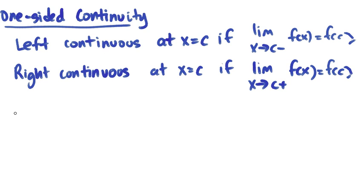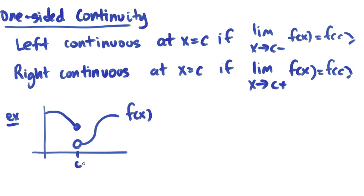For example, this graph of f of x, there's your c value. The left is continuous, because as you approach the limit, you get the value f of c,